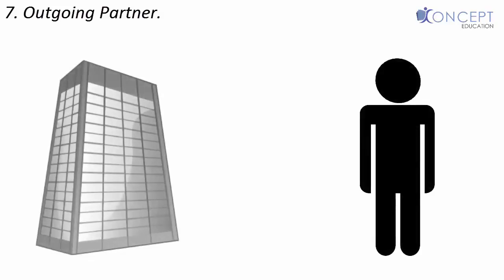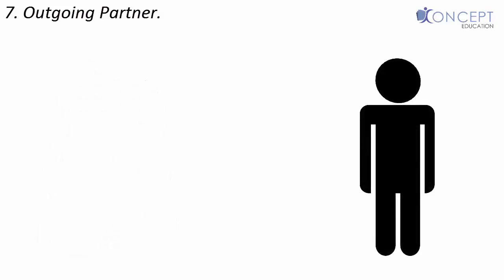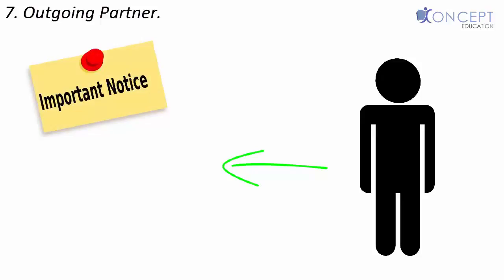The next is an outgoing partner. An outgoing partner is a person who is retiring from the firm. If he is an active partner, he needs to give a public notice of his retirement, else he would be liable for the debts of the firm even after his retirement.